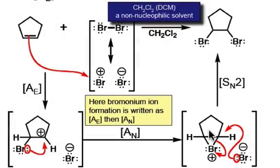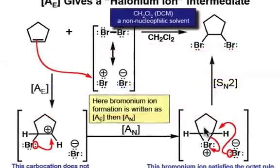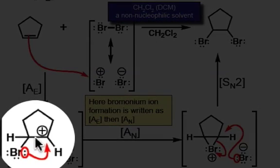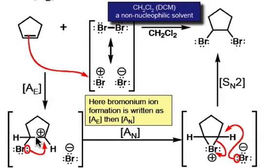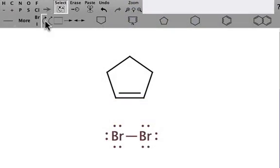Before we proceed to our SN2 step, I just stated that the second variation when an electrophile has a lone pair involves an ACB and an SN2 step. But in reality, we know that this carbocation intermediate is highly unstable, and there's actually a way to perform this A sub B step and this A sub N step in a concerted manner so that we avoid this carbocation intermediate entirely.